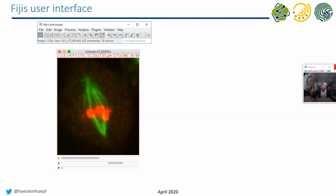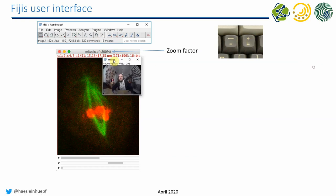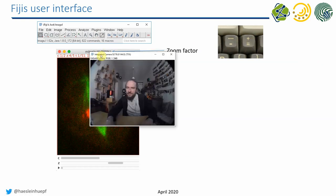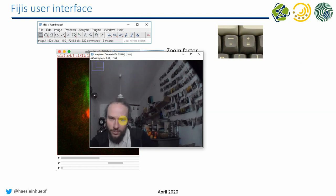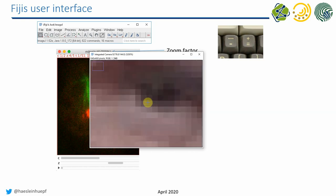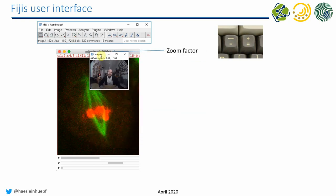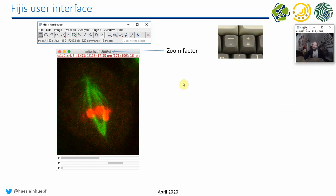The Fiji image window contains a lot of information. You can see the zoom factor — how enlarged the image is on your screen — and use the minus and plus keys to zoom. You can press the plus key to increase the window, and the position of the mouse matters when zooming in further. This is something many people learn late, so it's worth knowing now.